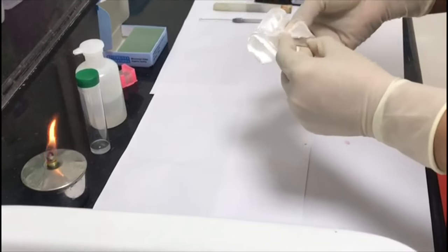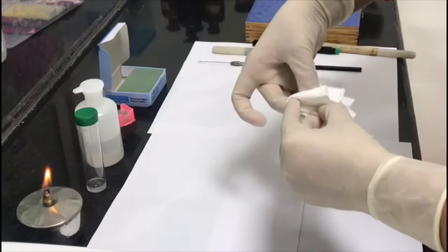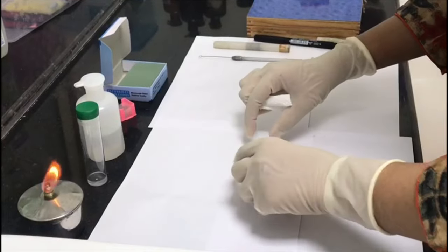Now we are going to demonstrate how to make a KOH mount. First step is to take a glass slide and clean it using a blotting paper.